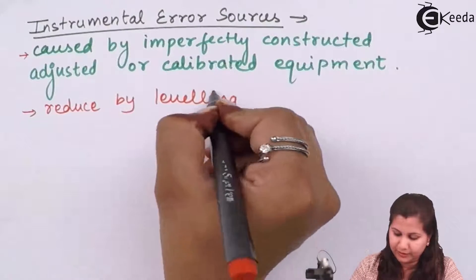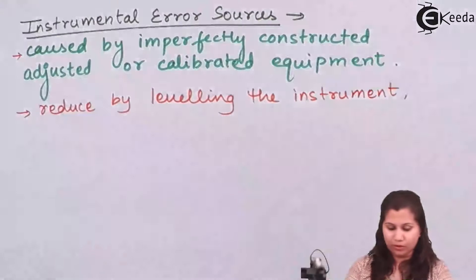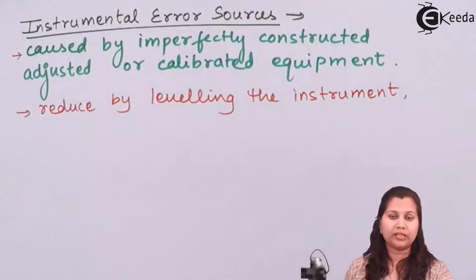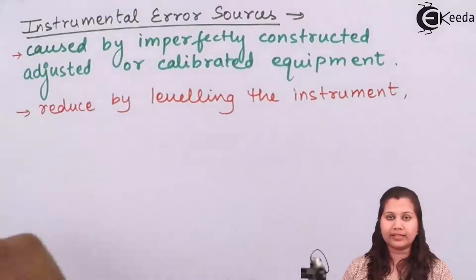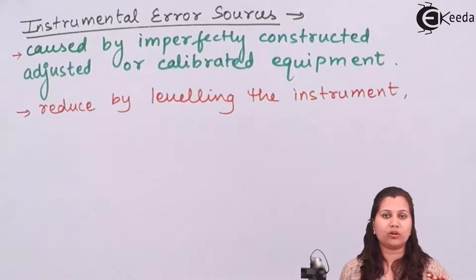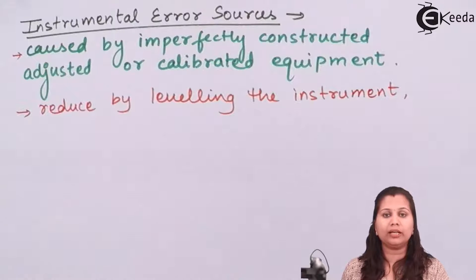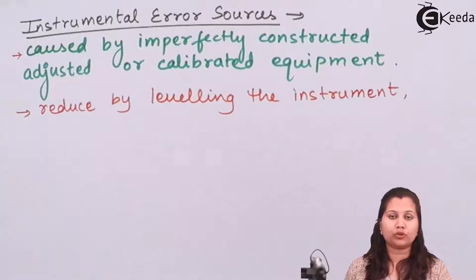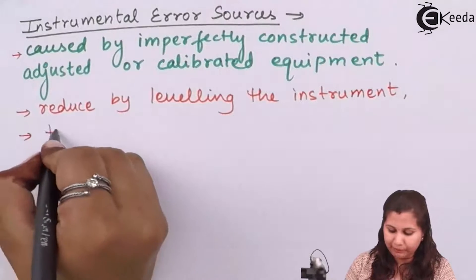We should keep the instrument at a flat, stable surface. Also, we should calibrate the instrument periodically. If the instrument is not in use for two or three months, rusting can occur in the parts, so we must maintain and calibrate the instrument regularly so that it gives accurate results.